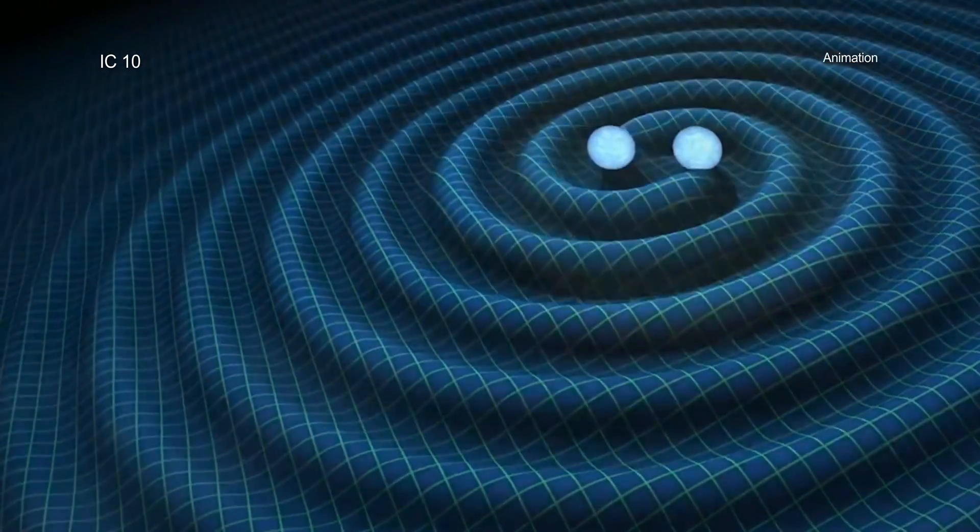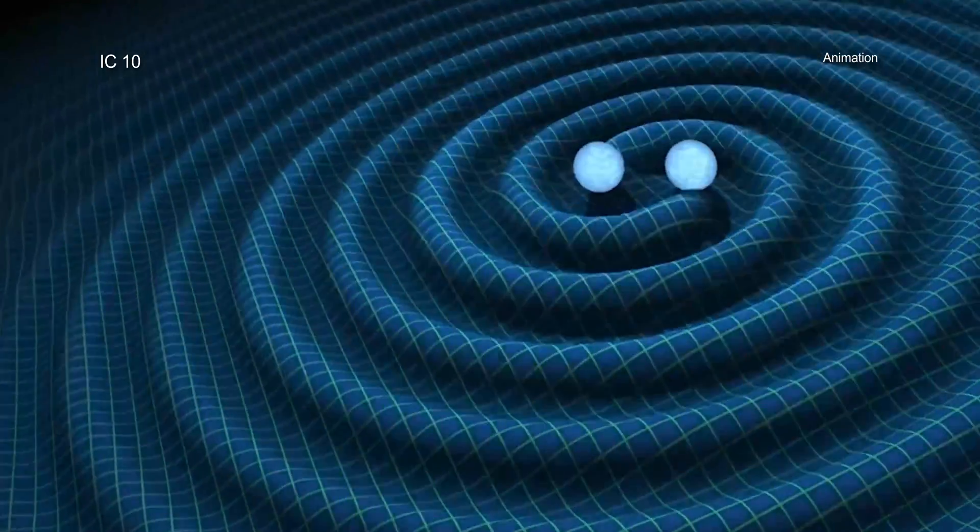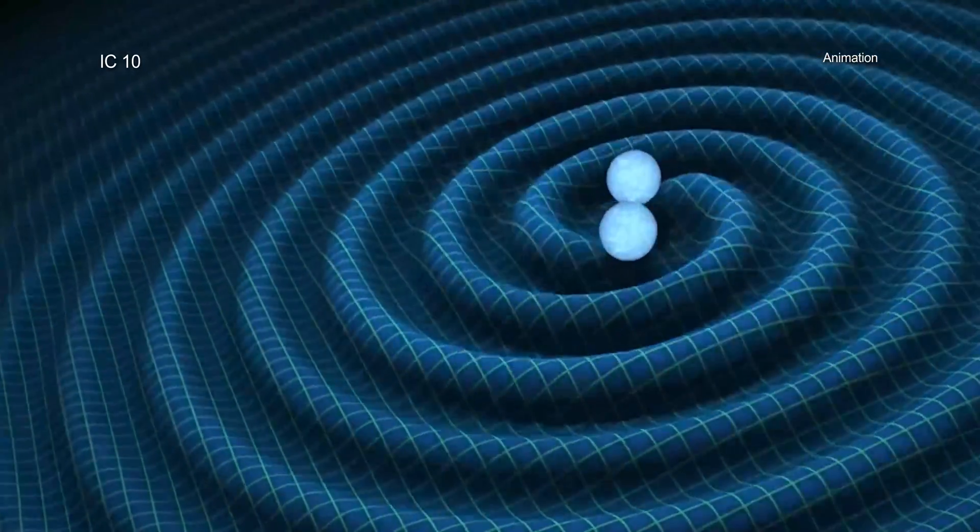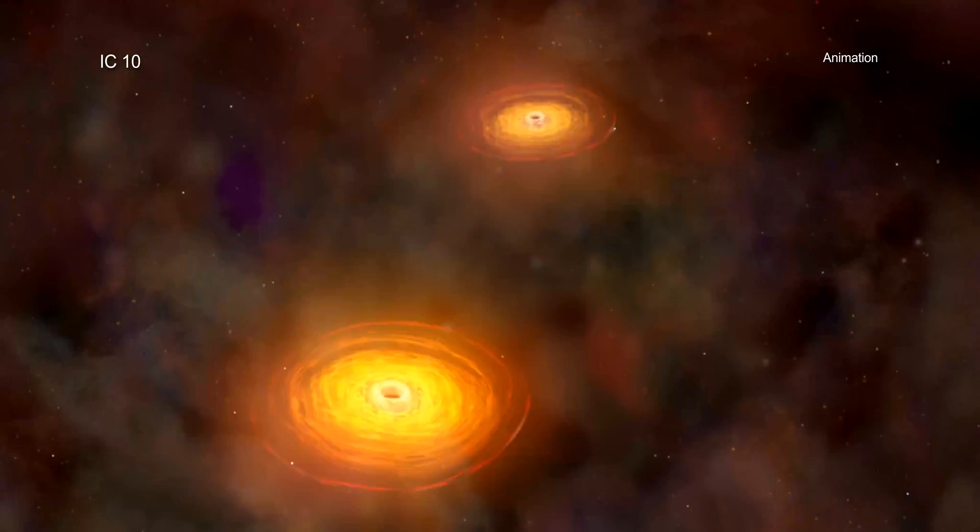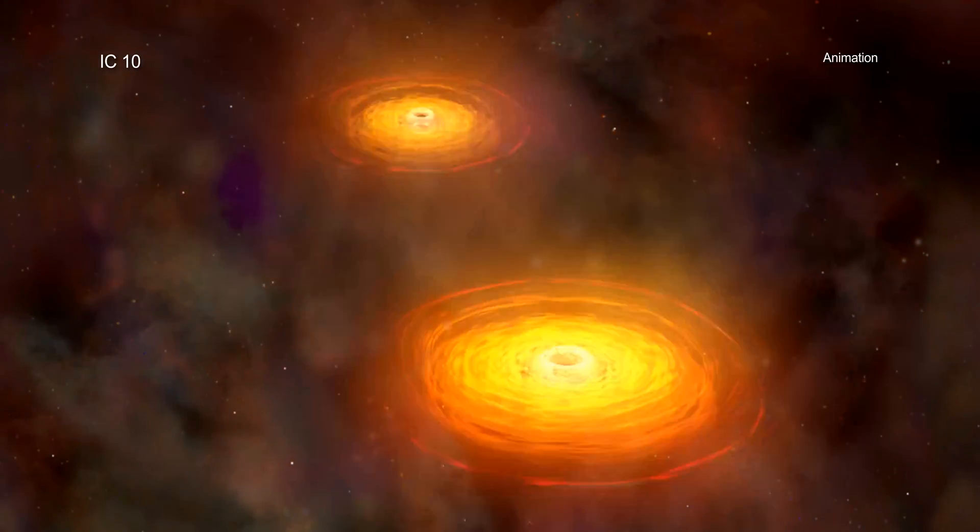If the separation between the compact objects becomes small enough as time passes, they will produce gravitational waves. Over time, the size of their orbit will shrink until they merge.